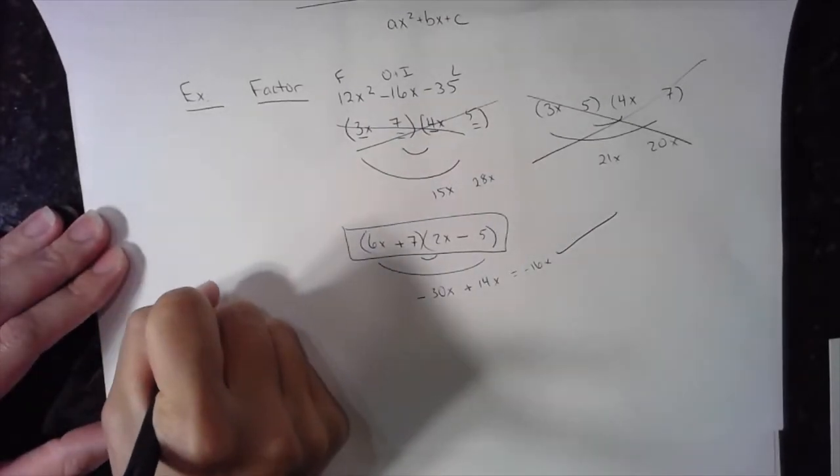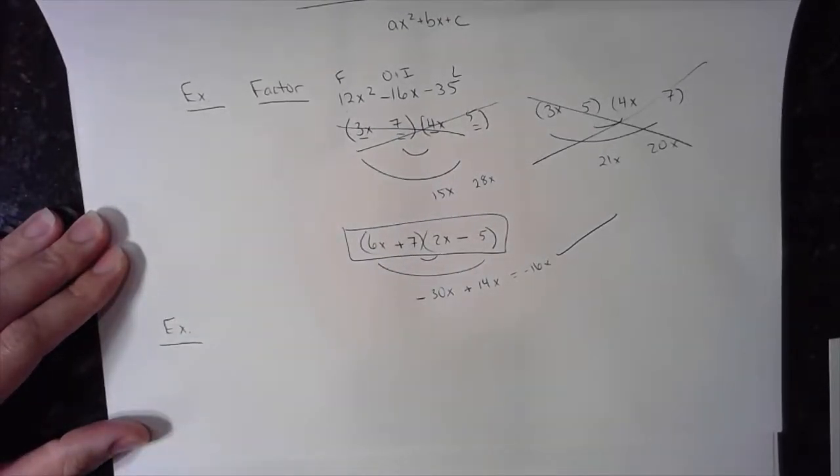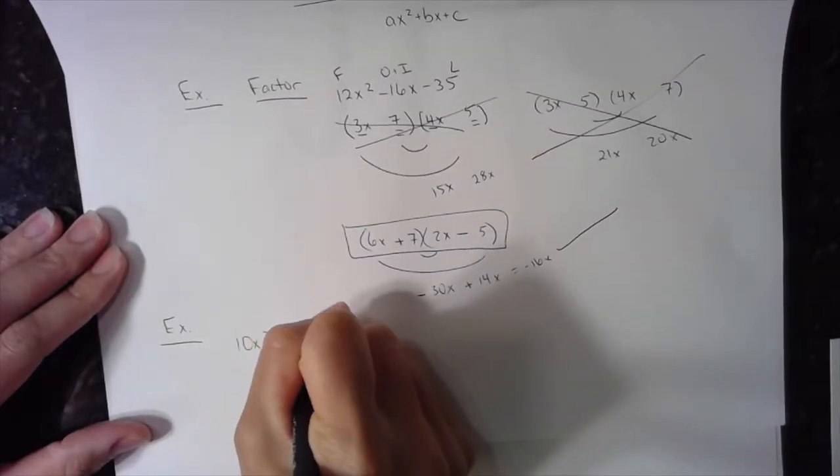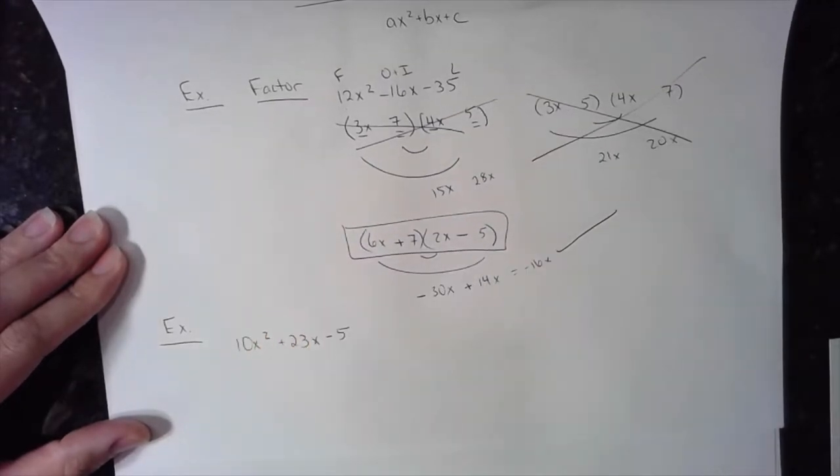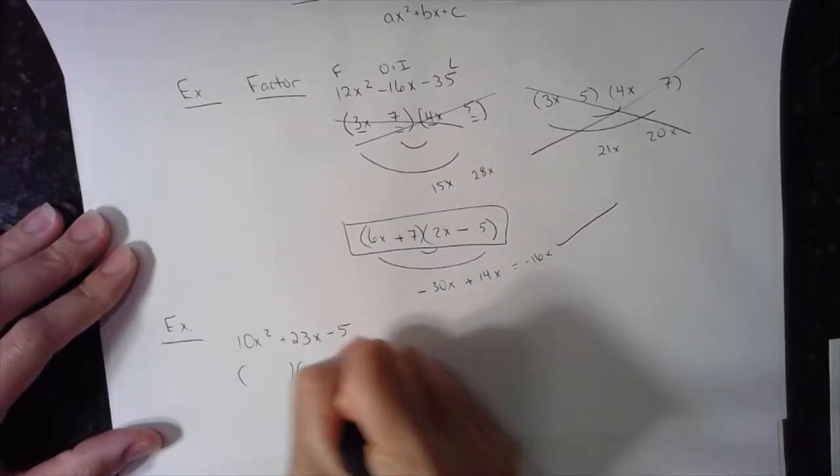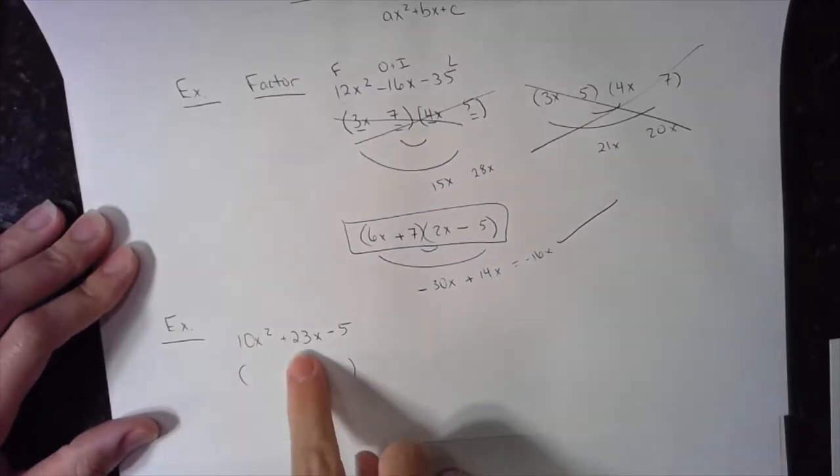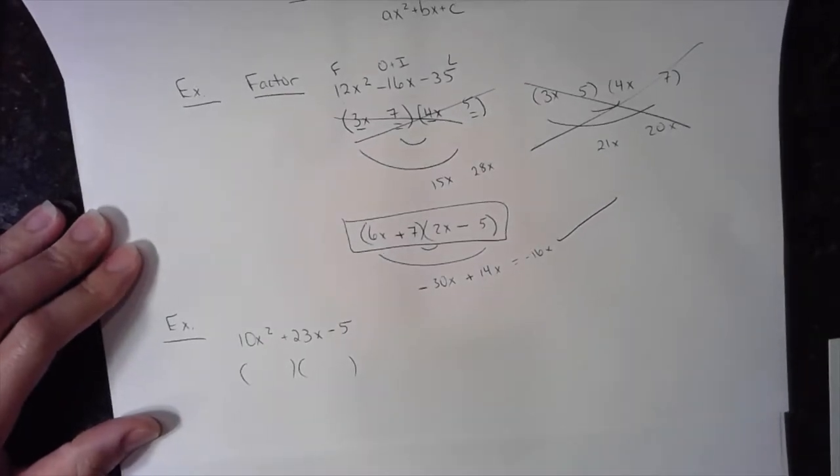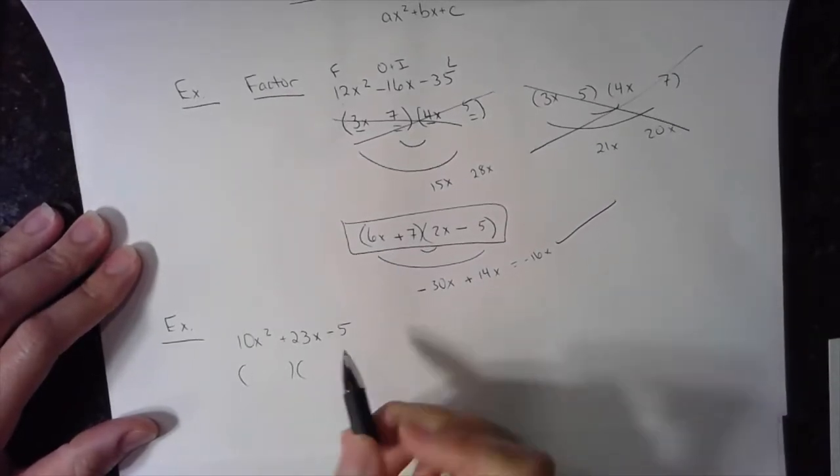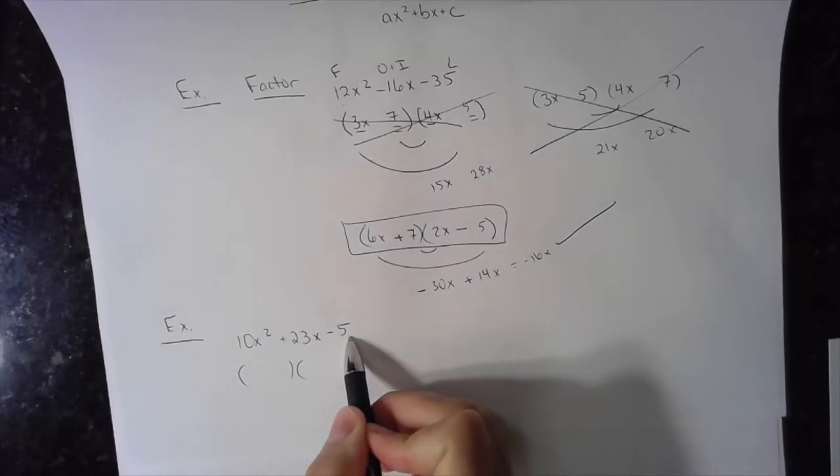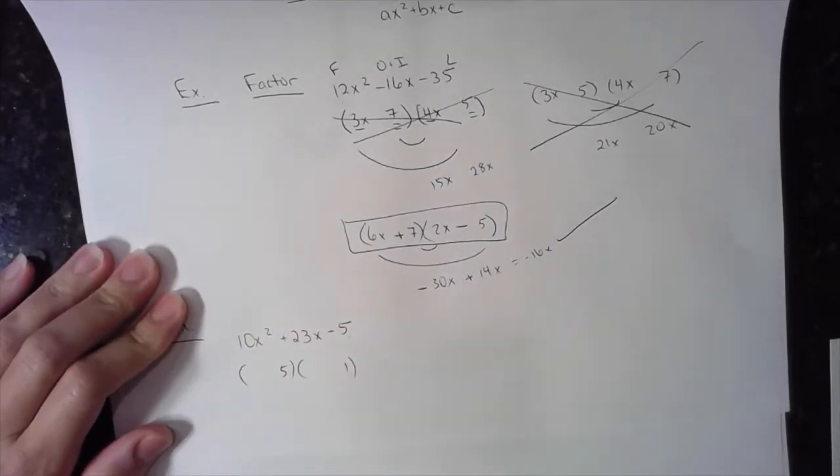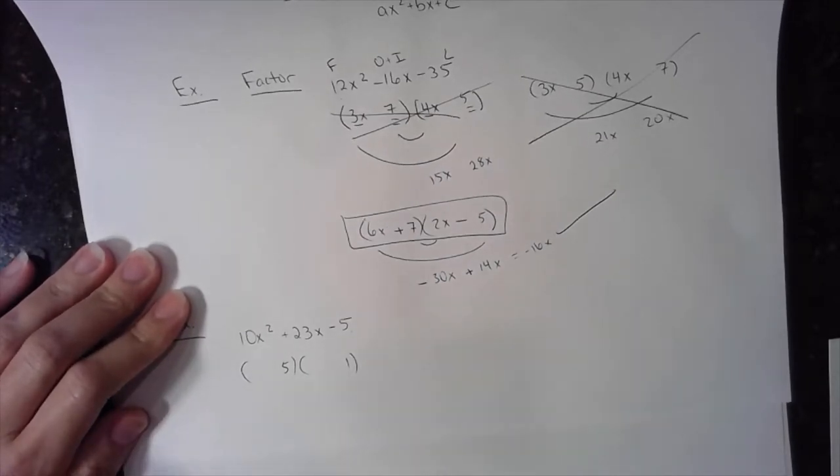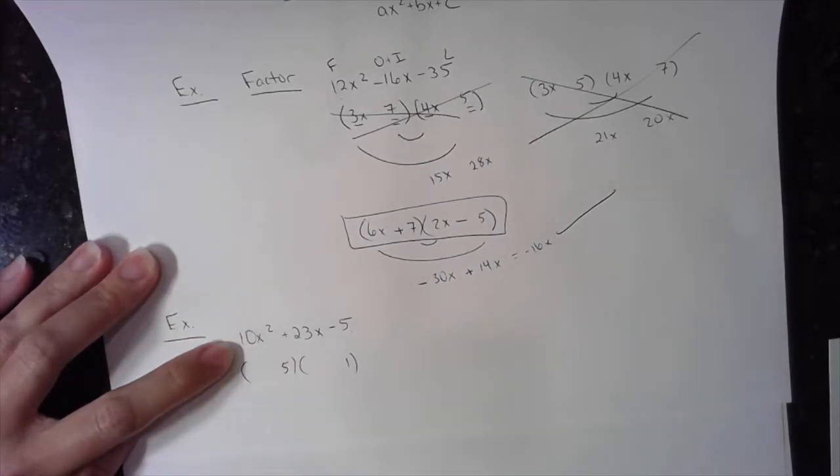Here's another one. Let's do this one. 10x squared plus 23x minus 5. Let's factor it. I want the bubbles. Signs are different. Pay attention to my signs. The nice thing about this one is that there are only two factors of 5. A 5 and a 1. So I don't have a choice. 5, 1, or vice versa. I don't have any other factors of 5. But I do have multiple factors of 10.